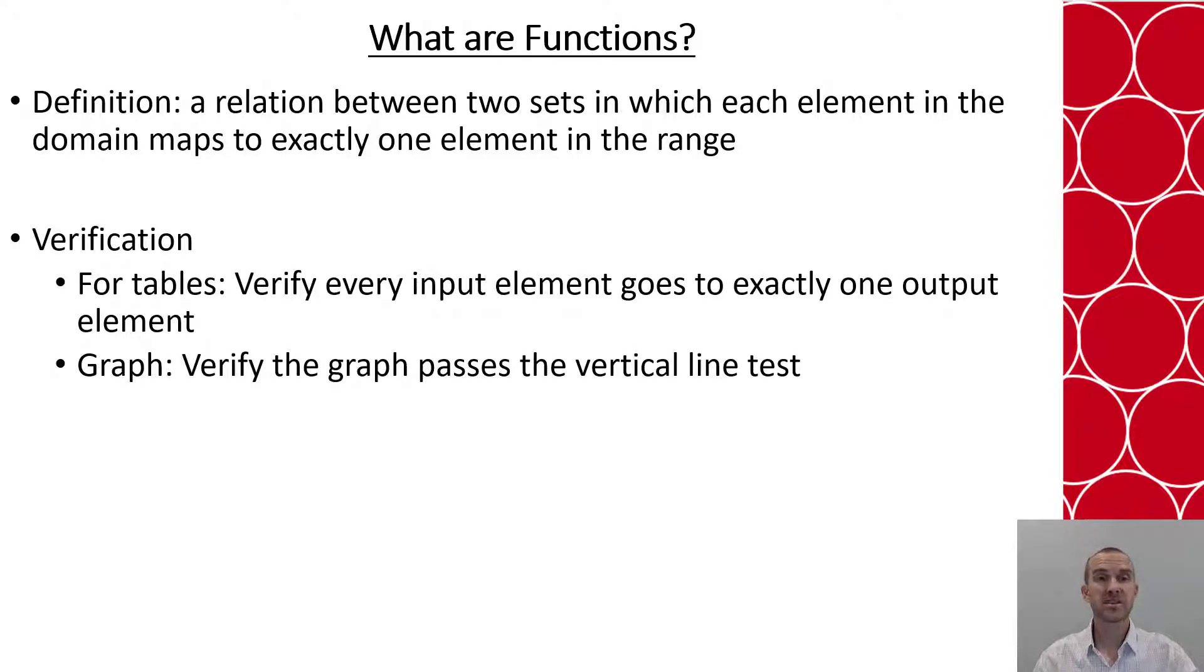We verify this in tables by looking at our inputs and comparing that to make sure that they have exactly one output. In a graph we're looking at the vertical line test and often those sets that we look at in tables we could graph and also use the vertical line test on them as well.